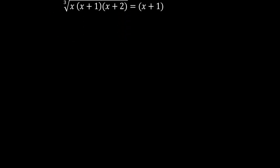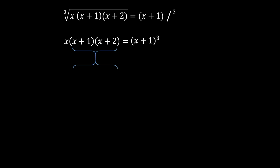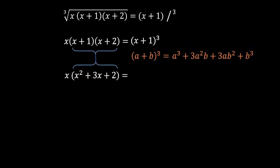Now we raise everything to the power of three. On the left side, the cube root cancels and we get x·(x+1)·(x+2). On the right side we get (x+1)³. Expanding the left side: x·(x² + 3x + 2). On the right side, applying the binomial cube formula again, we get x³ + 3x² + 3x + 1.